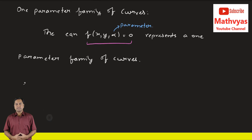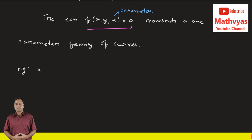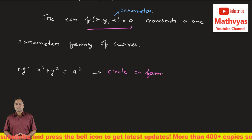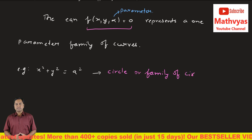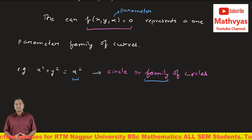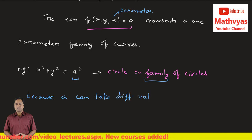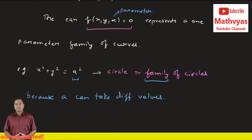For example, suppose I have a curve x² + y² = a². This represents the equation of a circle, or we can say a family of circles. This is because a can take different values, and for different values of a, you will have different circles — this is why we call it a family of circles.